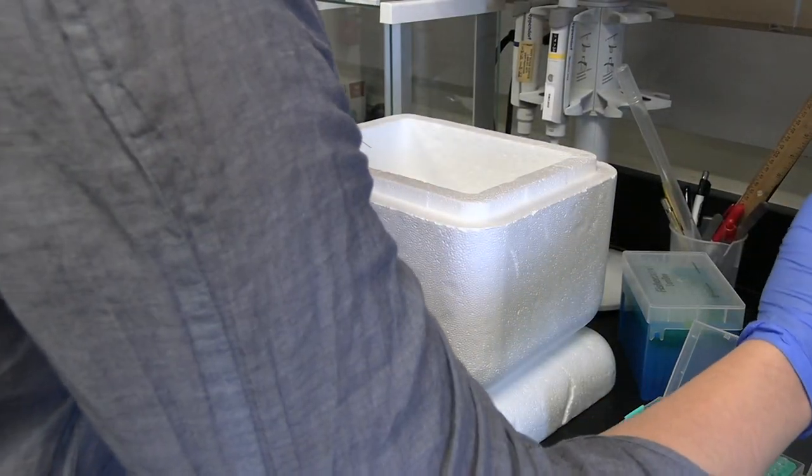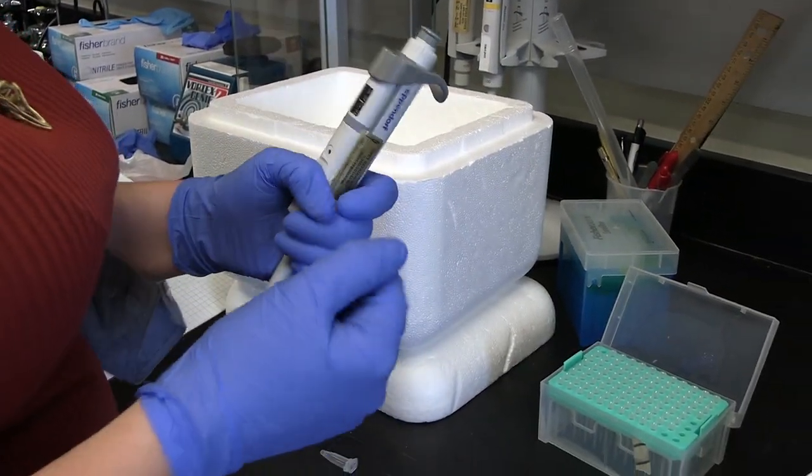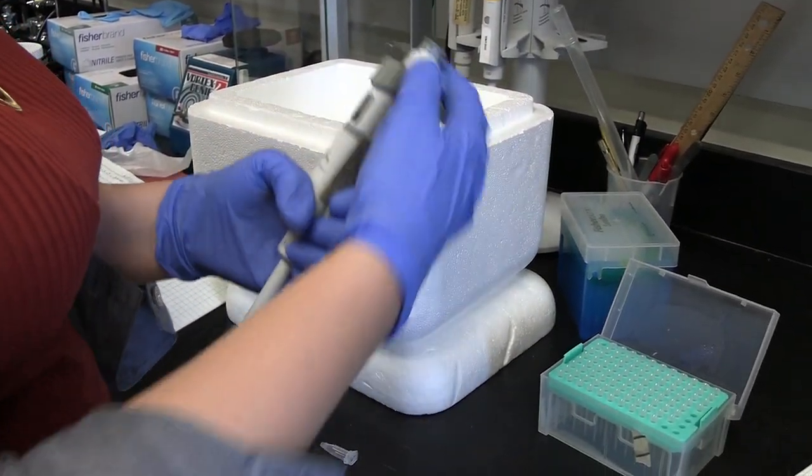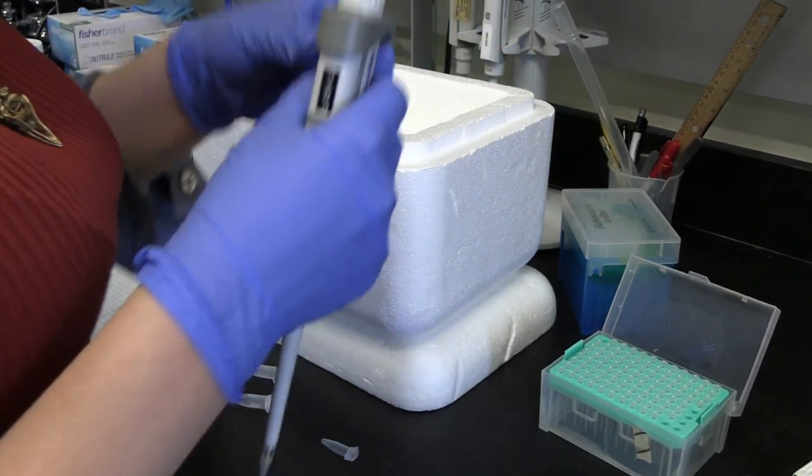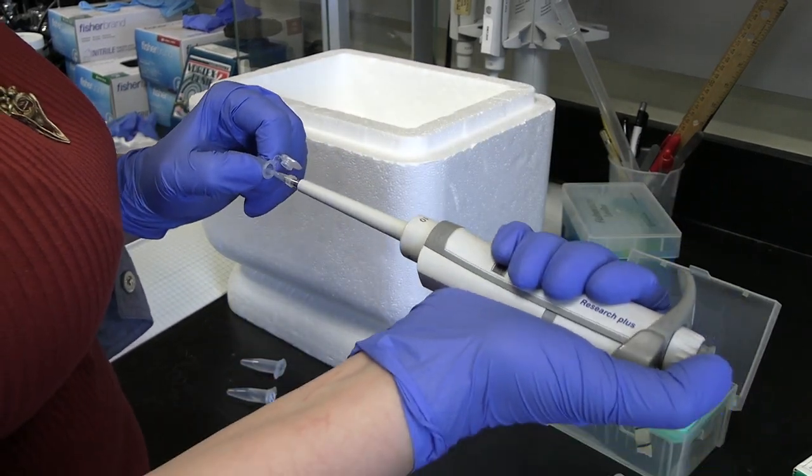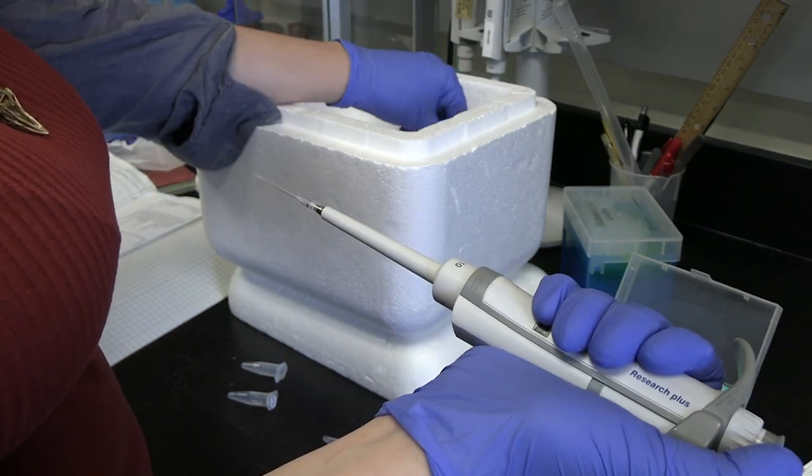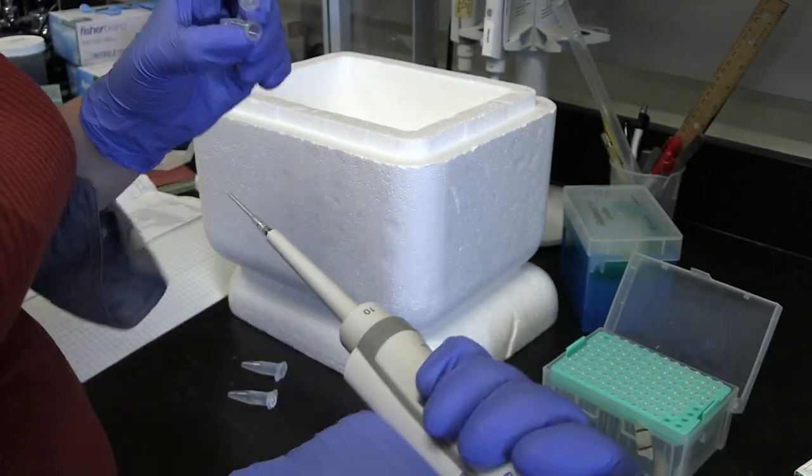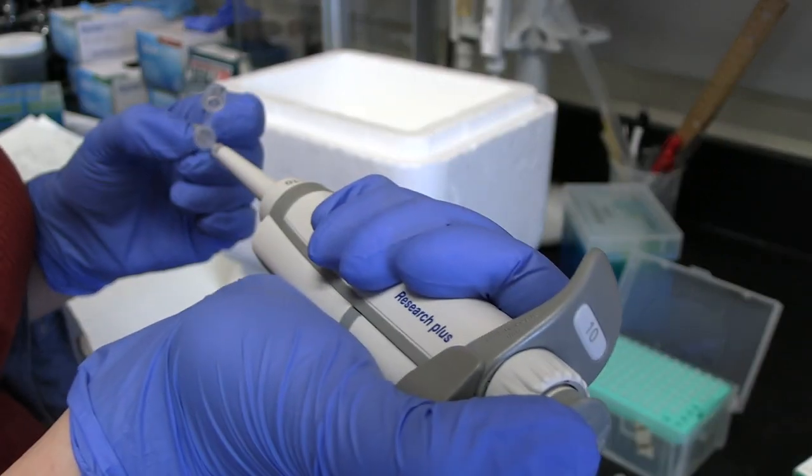The last thing I add is the kinesin clusters. You want to add that last to have the most control over when your sample starts the activity. 2 microliters out of what we prepared before. Since our network is polymerized, you want to take care to pipette it very gently.